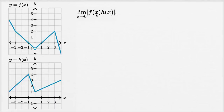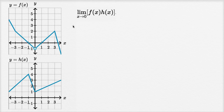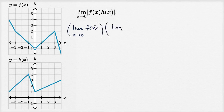Let's find the limit of f(x) times h(x) as x approaches zero. We have graphical depictions of y = f(x) and y = h(x). From our limit properties, this is the same as the limit as x approaches zero of f(x), times the limit as x approaches zero of h(x).